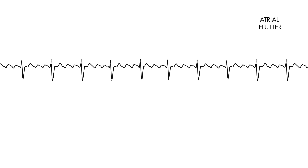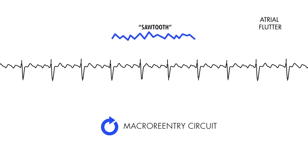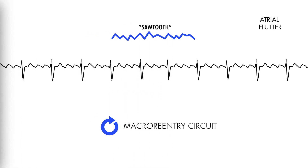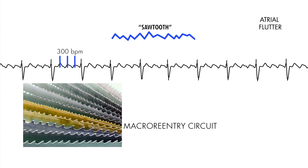In atrial flutter, we see this classic sawtooth baseline, which is the result of a macro reentry circuit. You could have similar reentry circuits in cases of focal atrial tachycardias, but those occur at a much smaller scale, to the point that we classify those ectopic foci as a single atrial focus. In atrial flutter, these reentry circuits are typically much larger, reflected as P-waves conducting at a rate of approximately 300 beats per minute, making this baseline look almost like teeth on a saw.